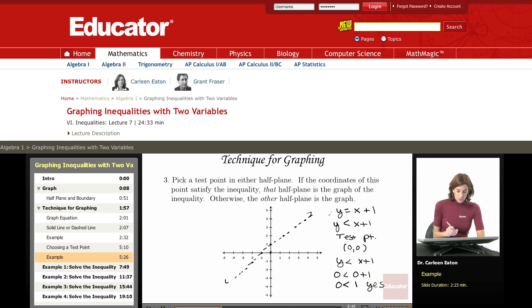That point, 0, 0, the origin is right here. What that means is that this, the origin, satisfies the inequality, and that this lower half plane is the solution, is the graph of the solution set.